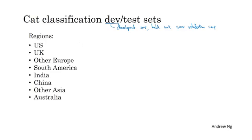Well, one way you could do so is to pick four of these regions, and say that data from these four regions will go into the dev set, and the other four regions will go into the test set. It turns out this is a very bad idea because in this example, your dev and test sets come from different distributions. I would instead recommend that you find a way to make your dev and test sets come from the same distribution.